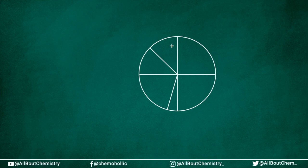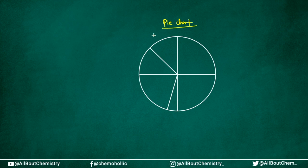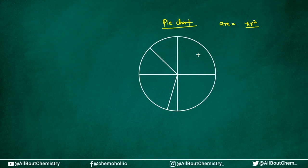A pie chart basically looks like a circle in which different sections are there. Why is it called a pie chart? Because this is a circle and the area of a circle is equal to pi r squared. Because everything is related to this pi, that's why we call it a pie chart.